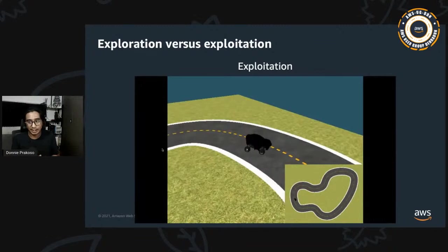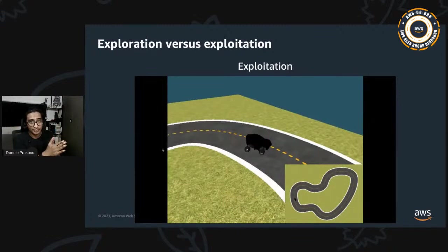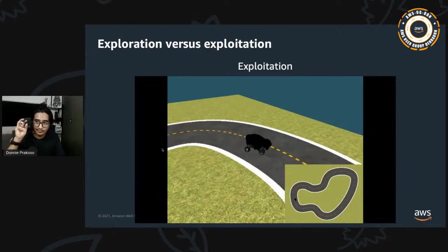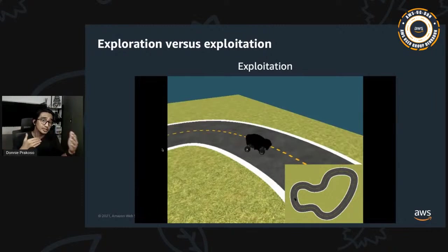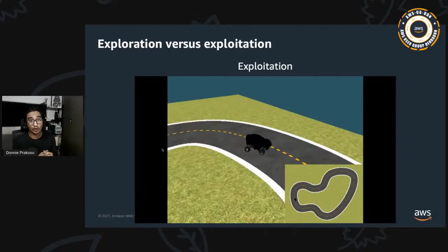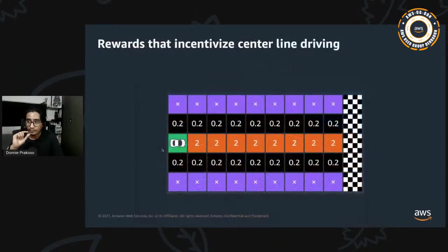Convergence happens when a model starts repeatedly picking specific actions depending on the state — the actions from each state no longer change. The model is optimizing for expected cumulative return. The trade-off between exploration and exploitation is configured through hyper parameters. If you explore too much, your model may take a very long time to converge; if you exploit too soon, your model may not find the best driving behavior and potentially also fail to converge.